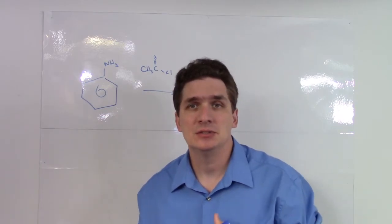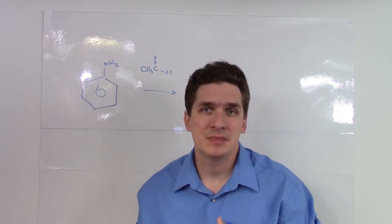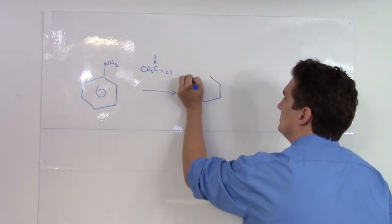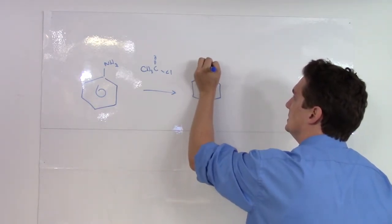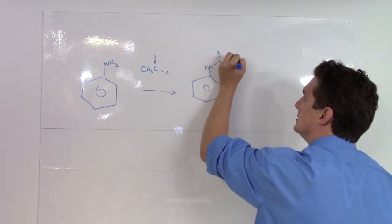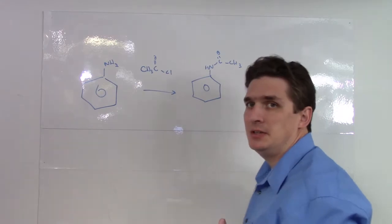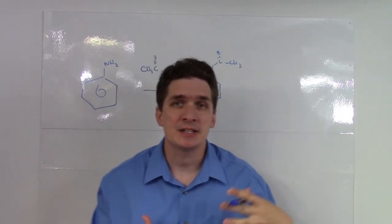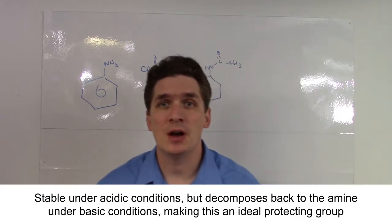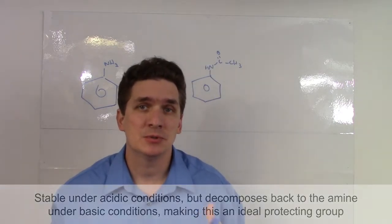This will end up producing the amine. Under acidic conditions this is actually stable. What we can do in this case is that this will make the amine group unreactive under any typical reaction conditions.